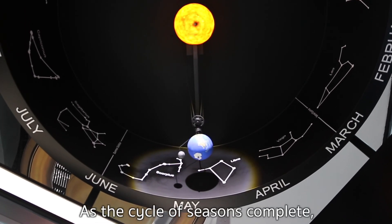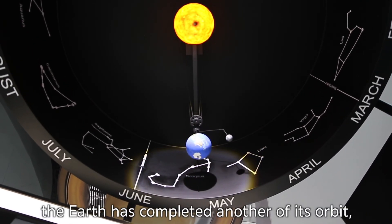As the cycle of seasons complete, the Earth has completed another of its orbit, lasting exactly one Earth year.